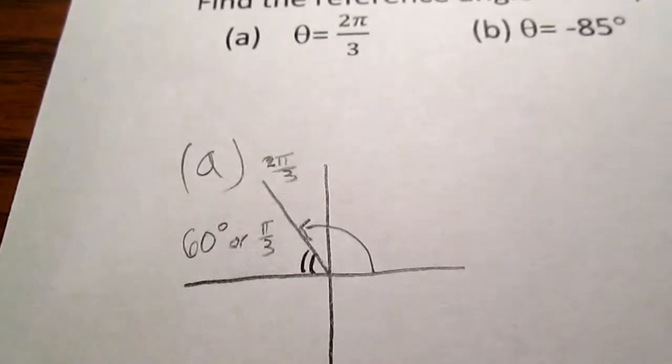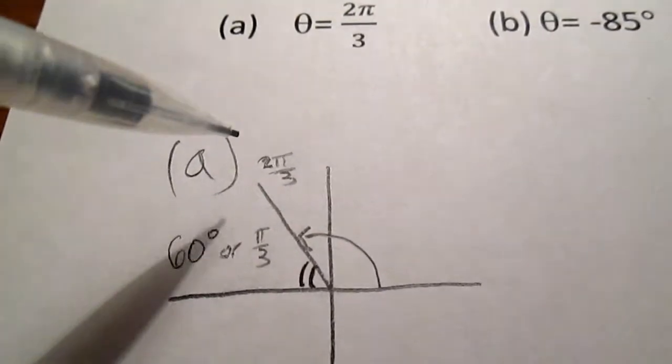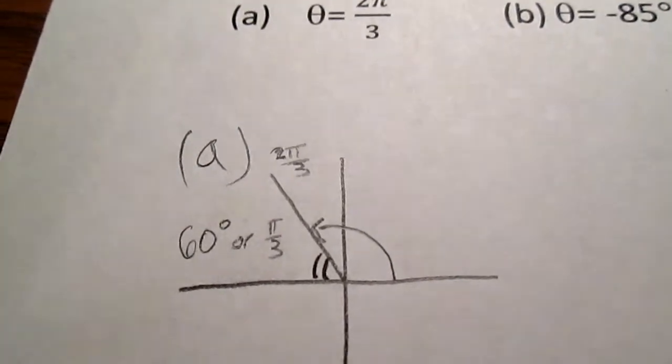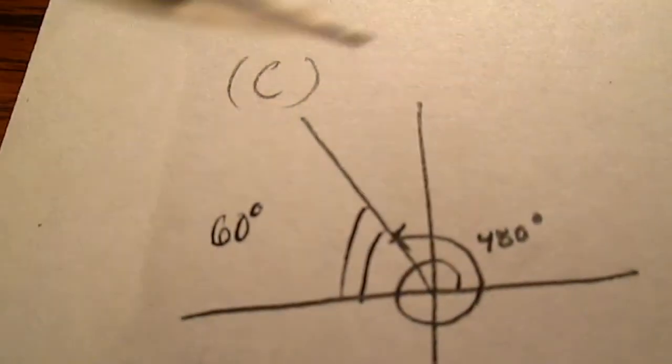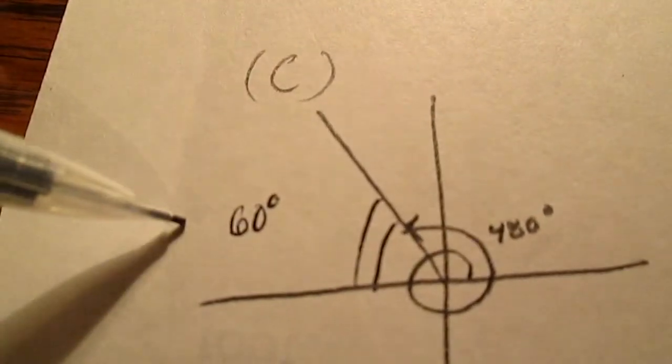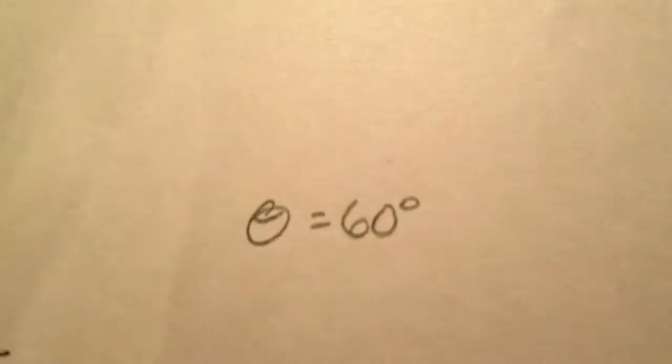Because since we did a, where 2π over 3 is 120 degrees, this one is actually 60 degrees, and since it gave it to you in degrees, 60 degrees is the reference angle. Thank you.